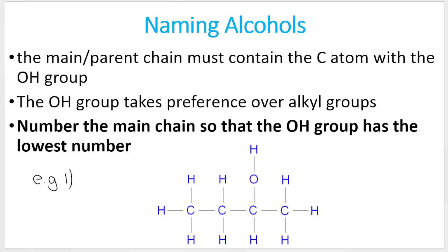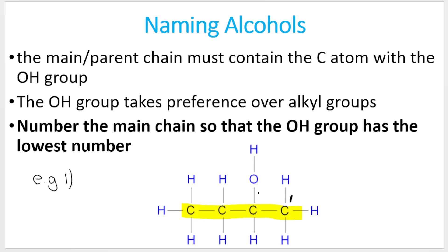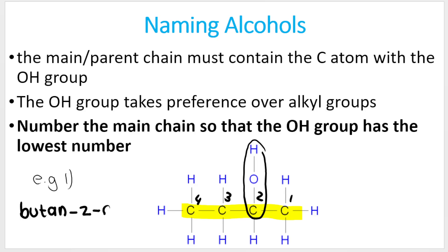Here's a basic example. The main carbon chain has four carbons. We can number it one, two, three, four — making the OH on the third carbon — or the other way, one, two, three, four, which makes the OH group have a lower number. Our name: four carbons means butan, the OH is on carbon two, so butan-2-ol. Butan tells us four carbons, two tells us the OH group is on carbon two, and ol tells us it's an alcohol.